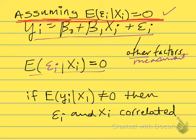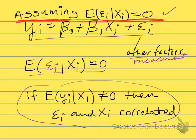If this assumption is not true, if it's not equal to zero, then the error term and the xi's are correlated. When x is high, maybe the errors are high. When x is low, the errors are low.